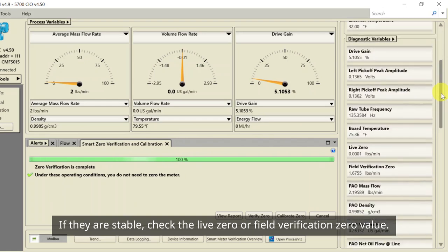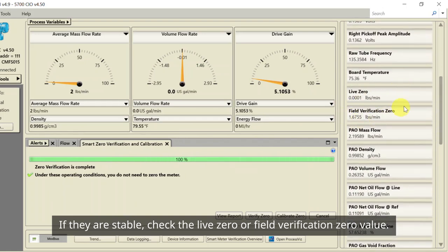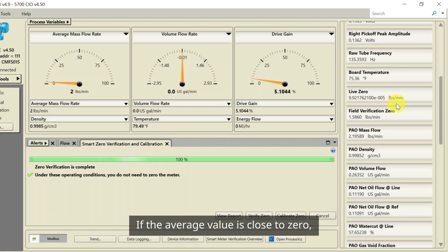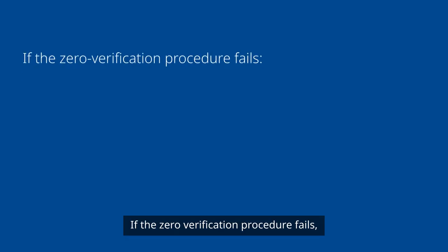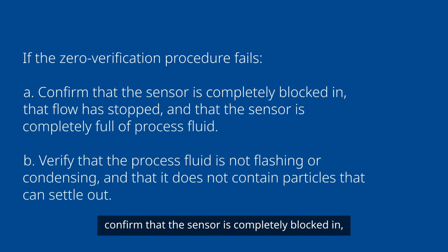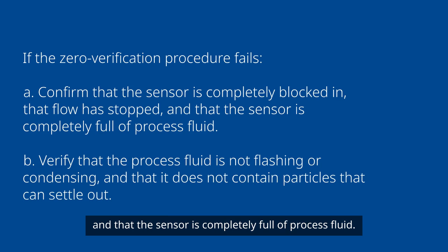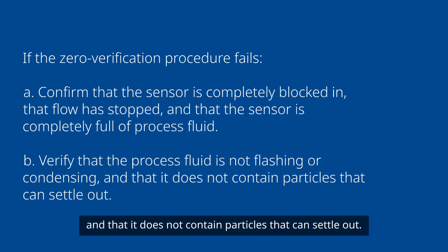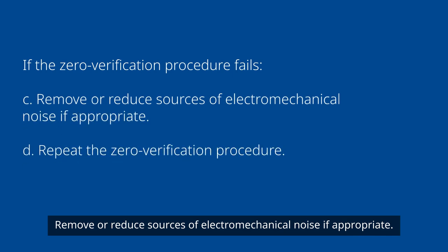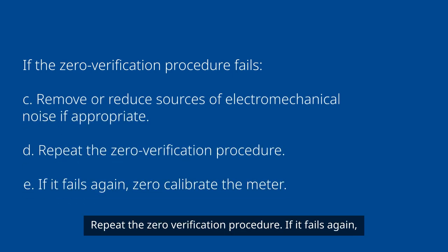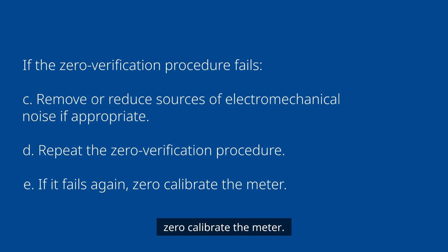If they are stable, check the live zero or field verification zero value. If the average value is close to zero, you should not need to zero the meter. If the zero verification procedure fails, confirm that the sensor is completely blocked in, that flow has stopped, and that the sensor is completely full of process fluid. Verify that the process fluid is not flashing or condensing, and that it does not contain particles that can settle out. Remove or reduce sources of electromechanical noise if appropriate. Repeat the zero verification procedure. If it fails again, zero calibrate the meter.